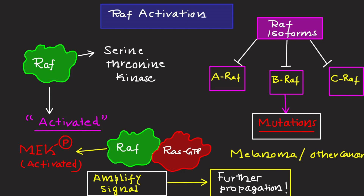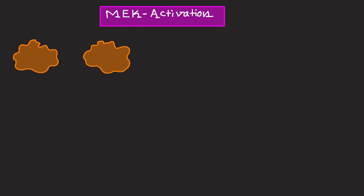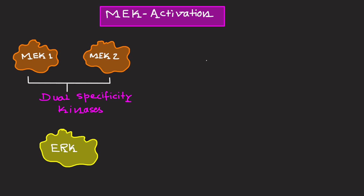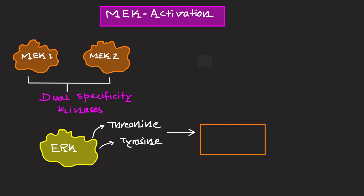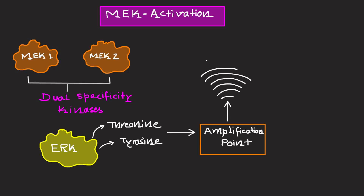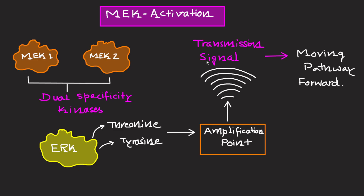Now let's talk about MEK activation. MEK1 and MEK2 are dual-specificity kinases that phosphorylate ERK specifically on threonine and tyrosine residues. MEK activation represents a critical amplification point, ensuring precise and robust transmission of the signal. Once activated, MEK phosphorylates ERK, moving the pathway forward to its downstream effects.